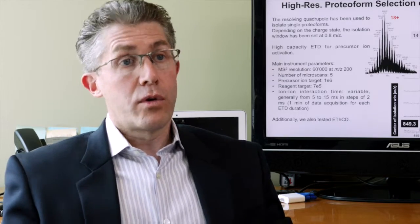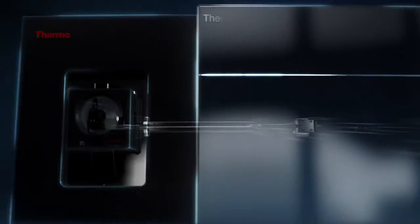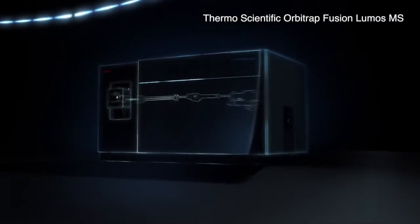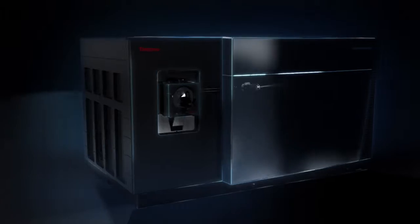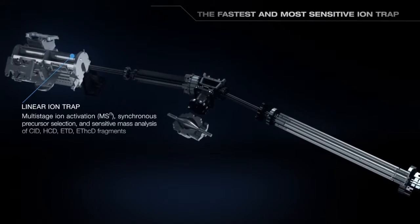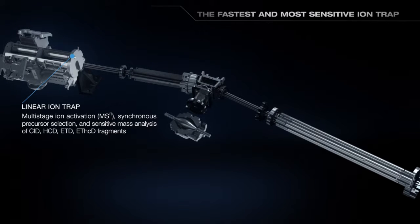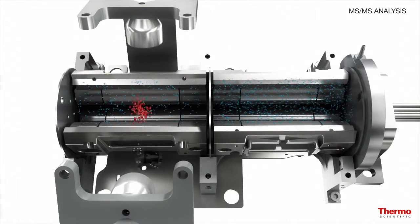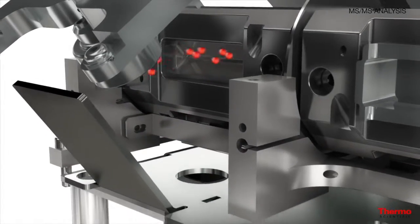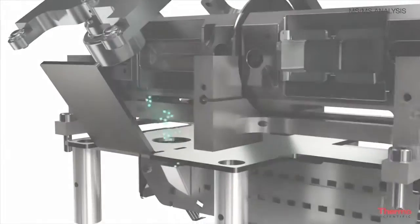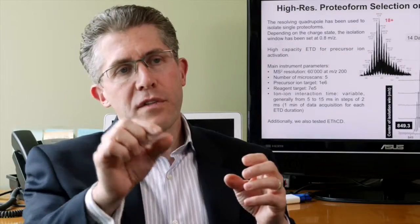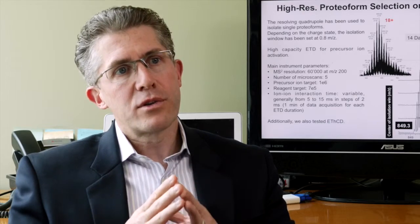In the Orbitrap Fusion Lumos we have a platform that really contributes and increases the power of all three of the things that we try to do well. On the quantitation front, you have the ion trap back end which is critical with its AGC automatic gain control functions to make sure that you're counting ions well. On the identification part, we want to pluck proteoforms specifically with narrow bandwidth isolation and that's endowed upon the instrument with the front end quadrupole.